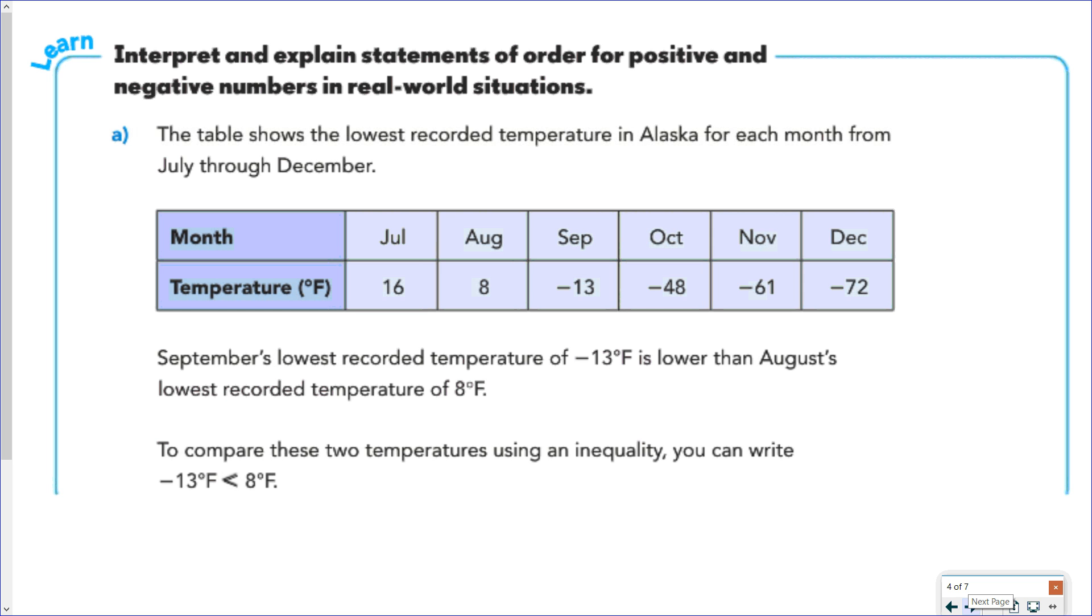You can use tables to help write those inequalities. Here we have recorded temperatures in Alaska, and you can see in July, the lowest record temperature was 16 degrees. August was 8 degrees, and so on. If you were to write an inequality comparing September's lowest recorded temperature of negative 13 to August's lowest recorded temperature of 8, we would write the following inequality. Negative 13 is less than 8.